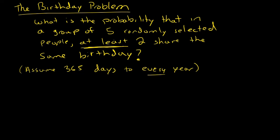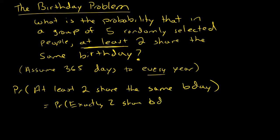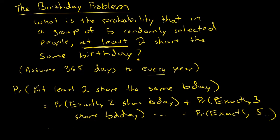Whenever you see the word 'at least,' as you begin to study probability more and more, you'll come to realize you want to start thinking about the complement. If I want to find the probability that at least two share the same birthday, I could theoretically find the probability that exactly two share a birthday and add that to the probability that exactly three share a birthday, then exactly four, all the way up until exactly five. That's a lot of work finding each of those probabilities, so instead what we could do is use complements.